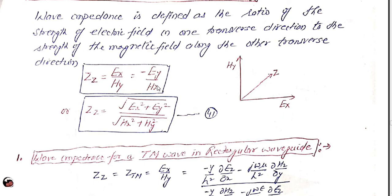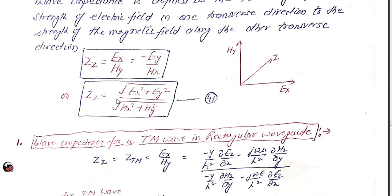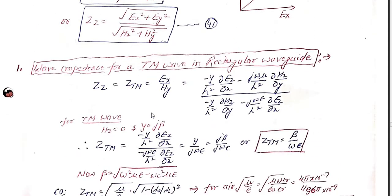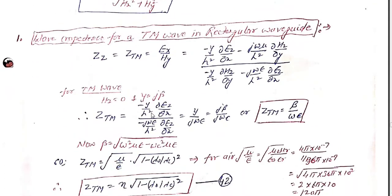Alternatively, it is minus Ey over Hx. So we can say the wave impedance Z can be written as the ratio of the square root of (Ex² + Ey²) divided by the square root of (Hx² + Hy²). Now we are going to see the value of these wave impedances for TM and for TE waves.